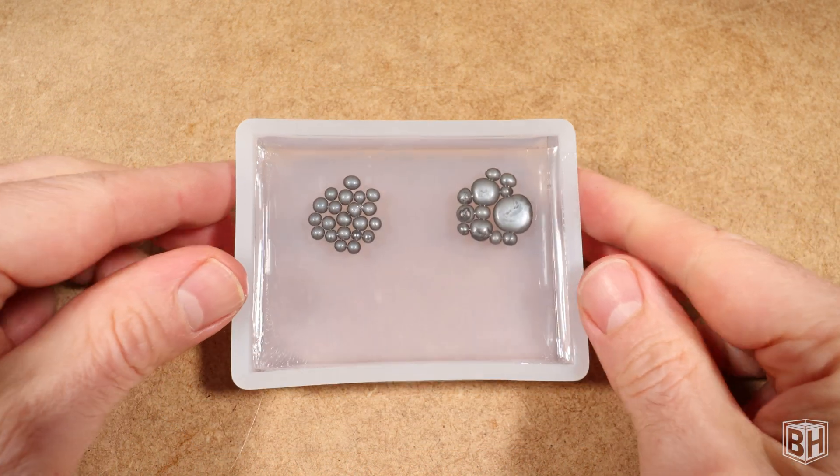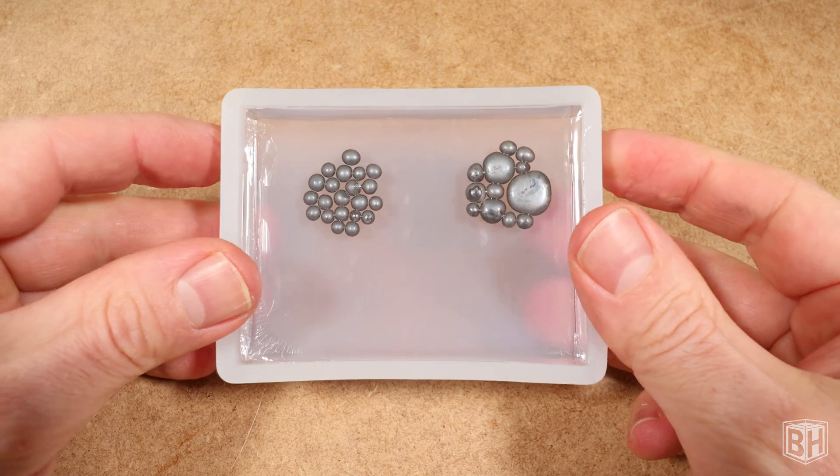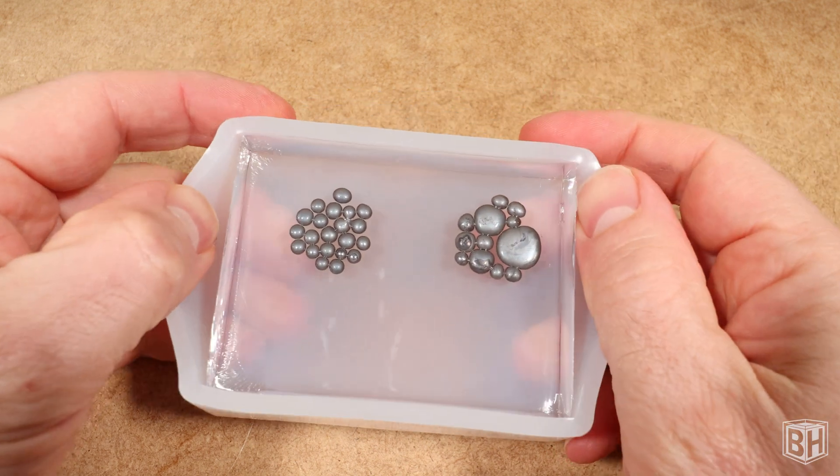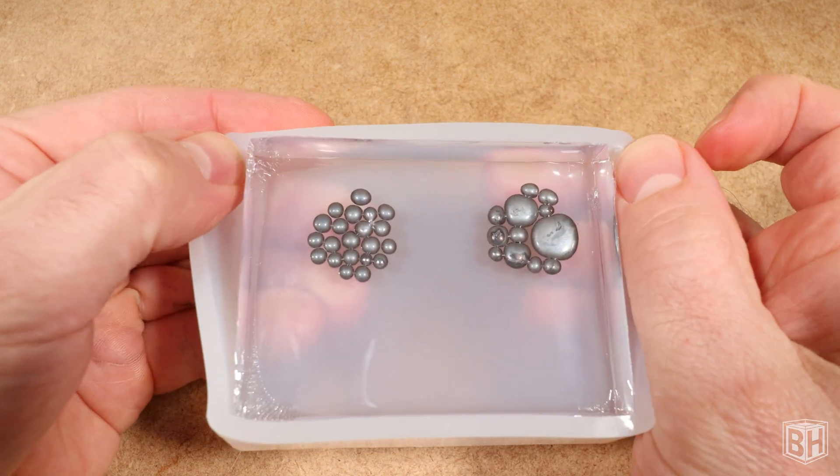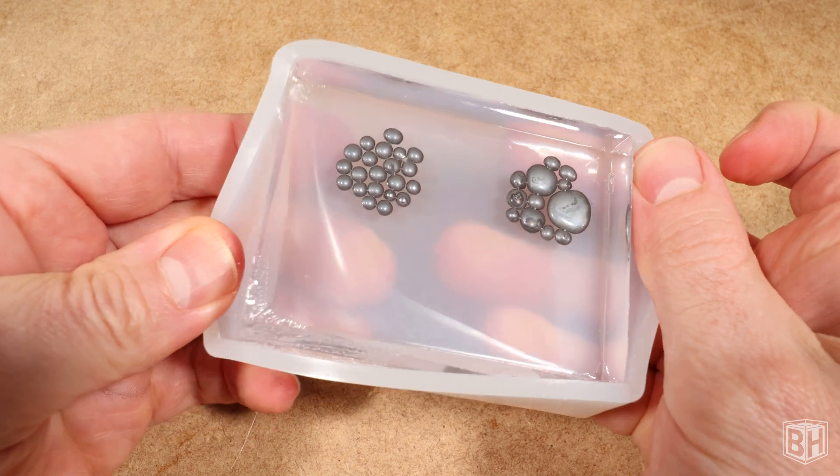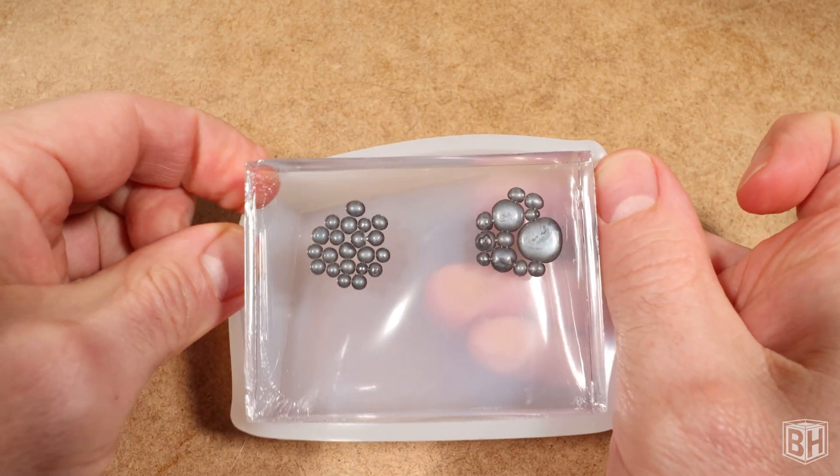Now the resin has hardened, I can take it out of the mold. But I notice straight away that the mercury is less shiny than it was when it was first added to the resin, and it has a dull gunmetal type grey appearance to it.